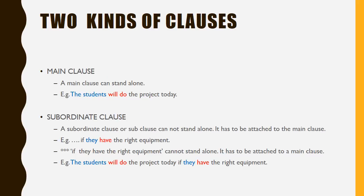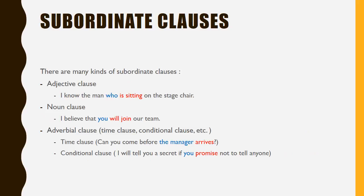There are two kinds of clauses: main clause and subordinate clause. A main clause can stand alone, for example 'students will do the project today.' A subordinate clause cannot stand alone — it has to be attached to the main clause, for example 'if they have the right equipment.' That clause must be attached: 'The students will do the project today if they have the right equipment.'